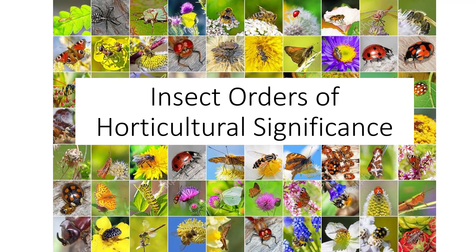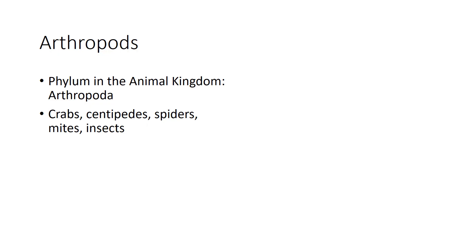There are a whopping 28 orders of insects. In order to control a pest or know if it is naturally being controlled, you must first identify the insect. Arthropods, which include crabs, centipedes, spiders, mites, and insects, are in phylum Arthropoda, which means jointed leg.